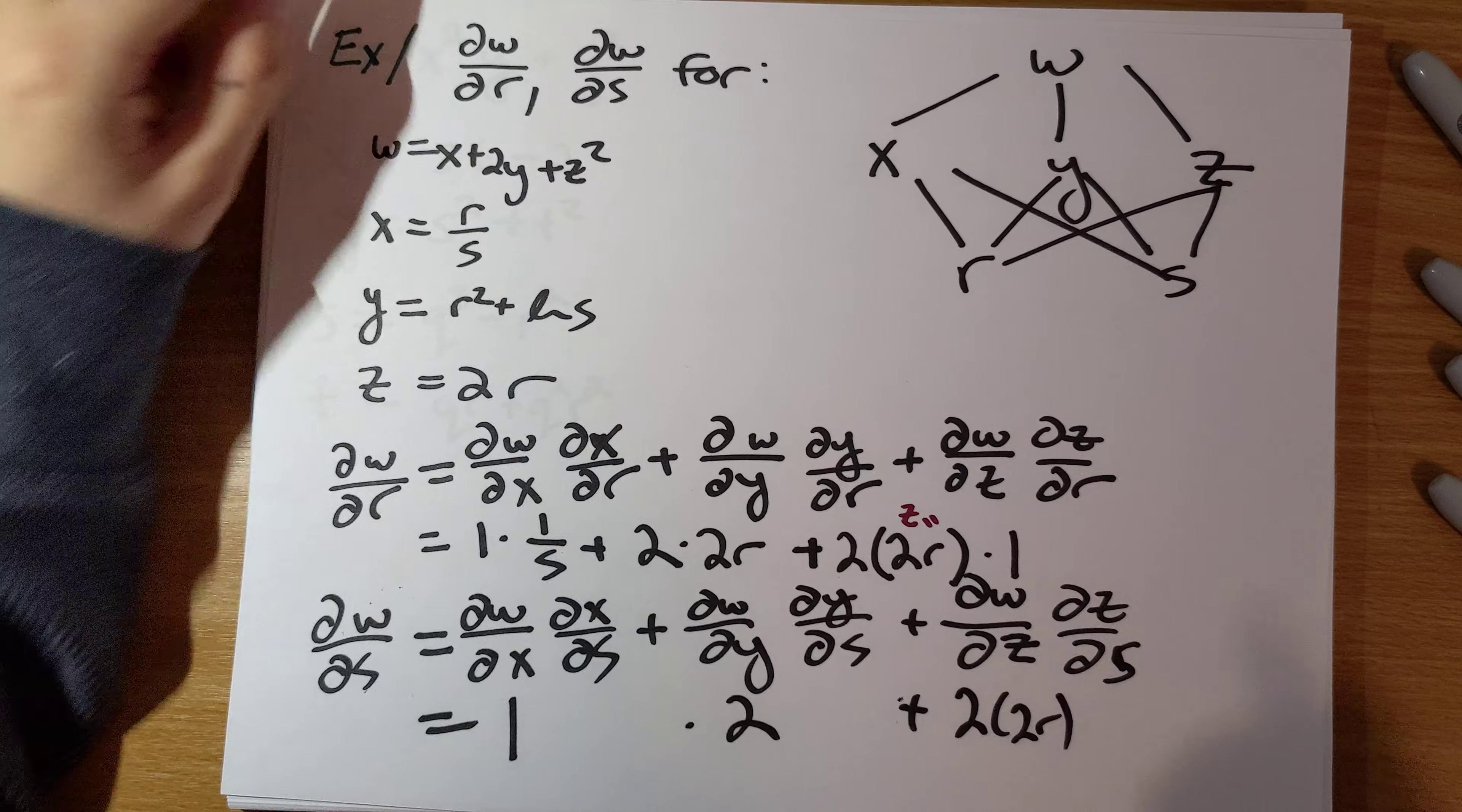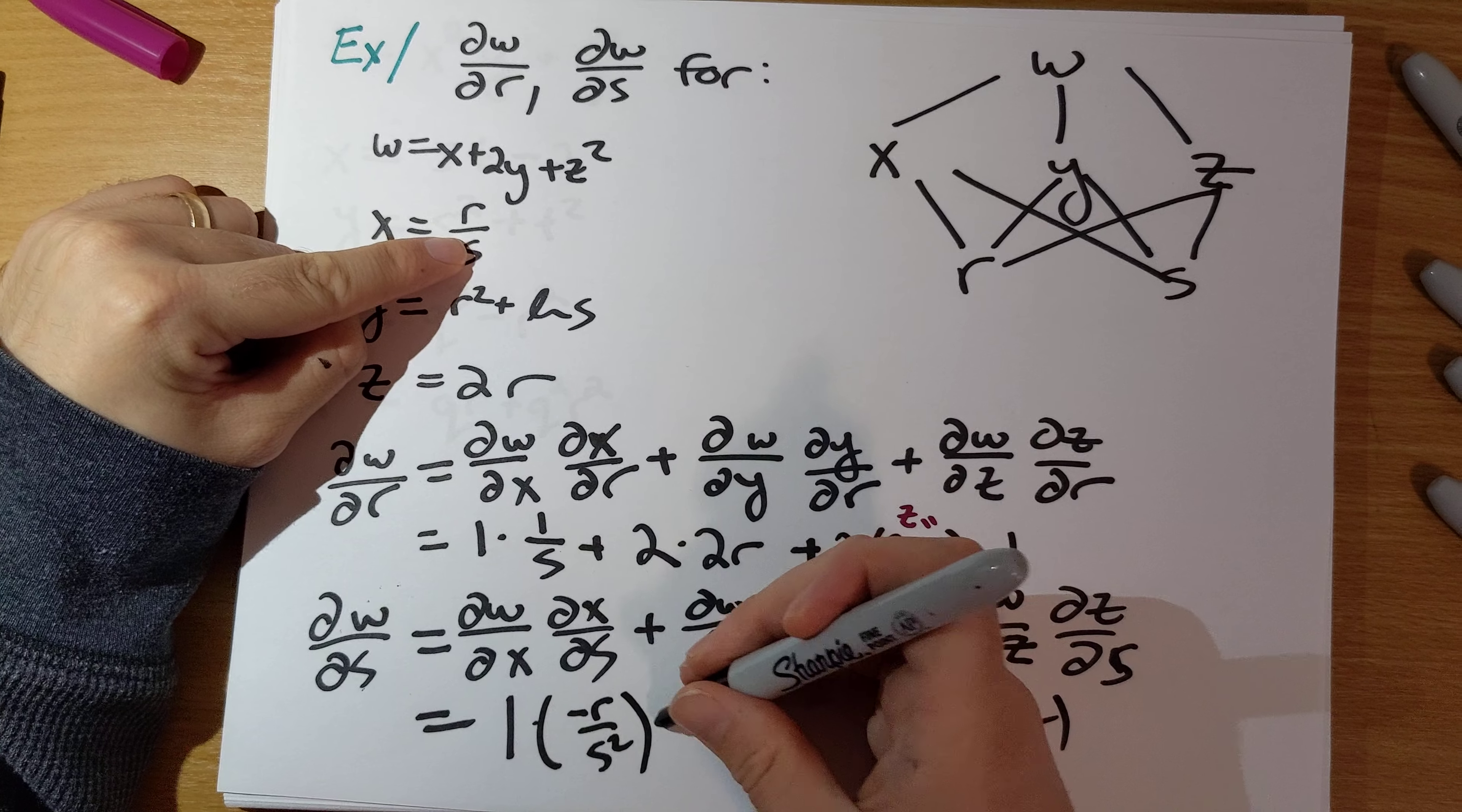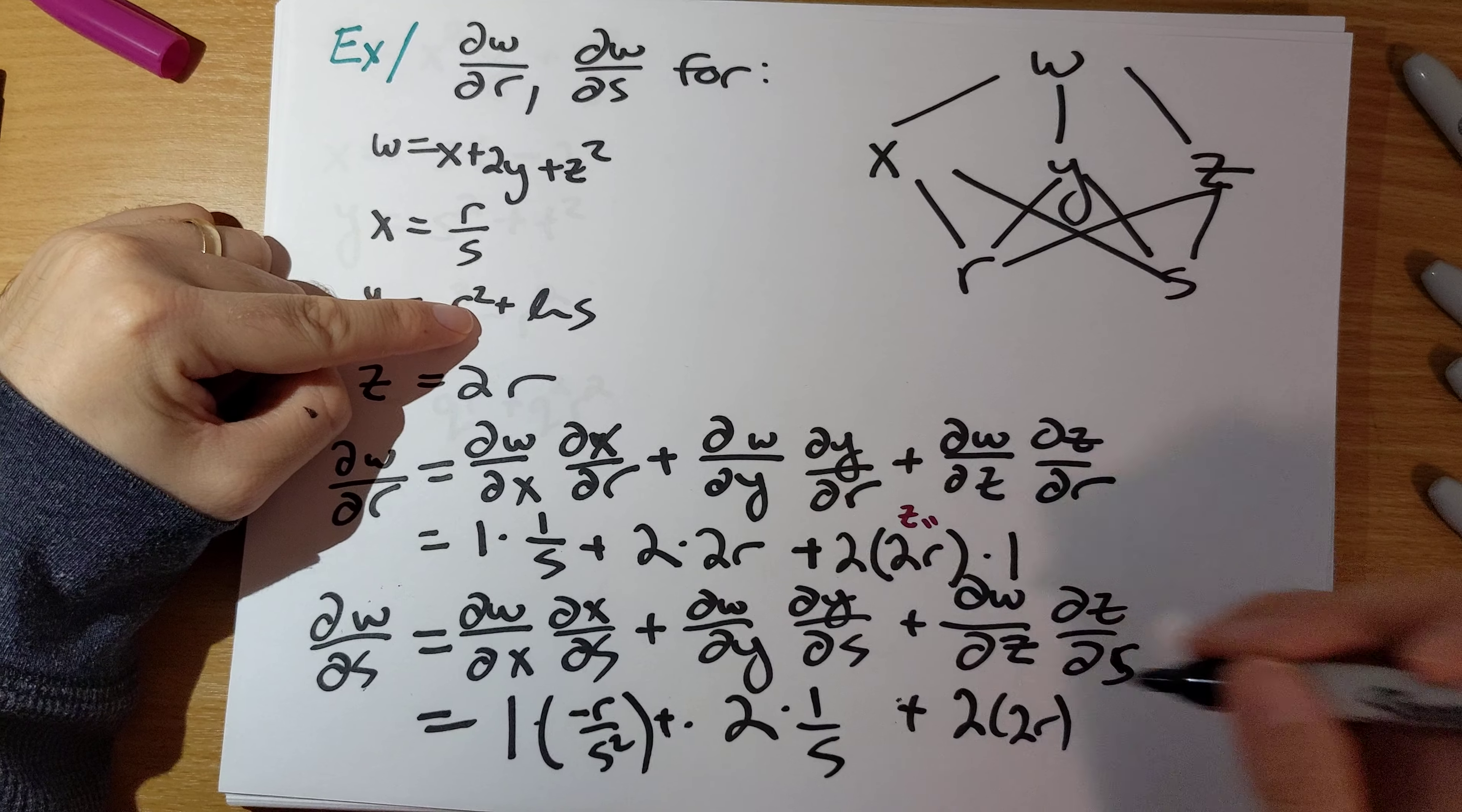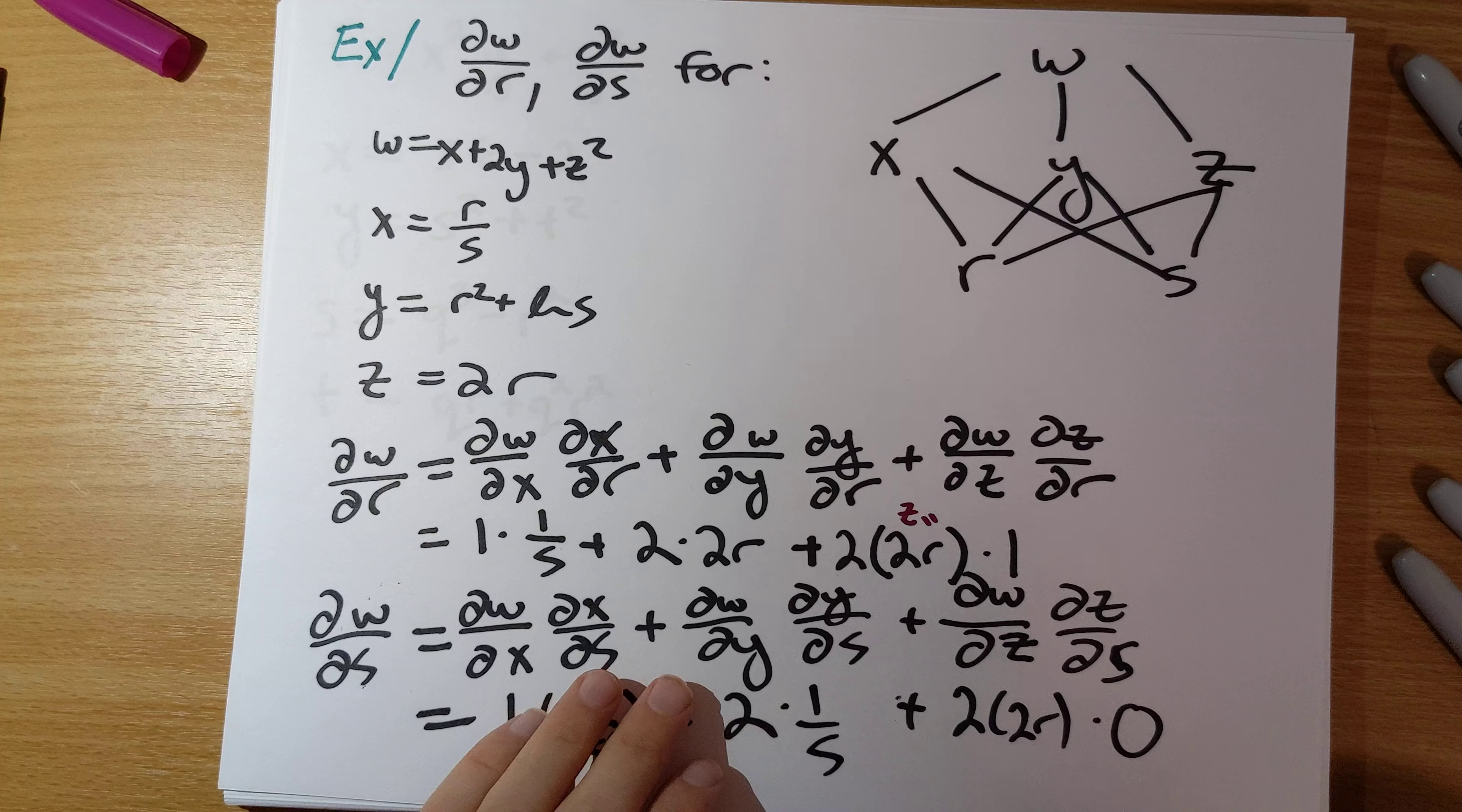Partial X partial S is going to be negative r over s squared. Partial Y partial S will be one over s, and partial Z partial S is going to be zero. And again, you can simplify this if you want to.